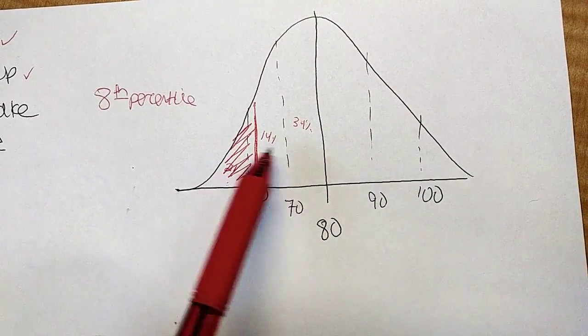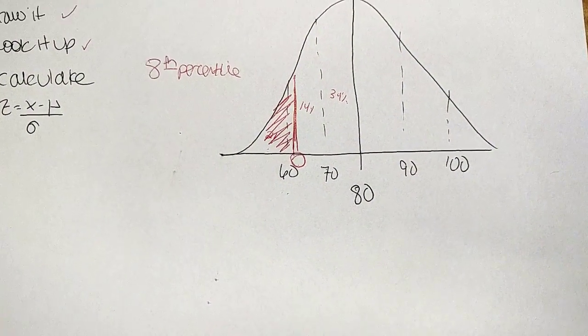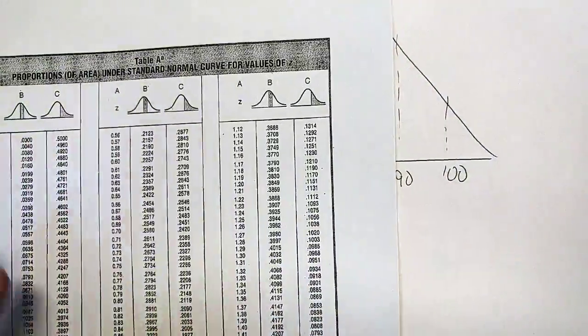Because C columns are always in the end. B columns are in the middle. So I'm going to look up, starting in the C column this time, 0.08.